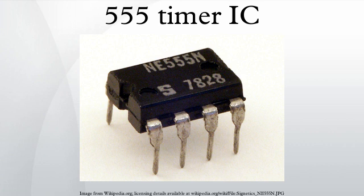In astable mode, the 555 timer puts out a continuous stream of rectangular pulses having a specified frequency. Resistor R1 is connected between VCC and the discharge pin, and another resistor R2 is connected between the discharge pin and the trigger and threshold pins that share a common node. Hence the capacitor is charged through R1 and R2, and discharged only through R2, since pin 7 has low impedance to ground during output low intervals. The frequency of the pulse stream depends on the values of R1, R2, and C.